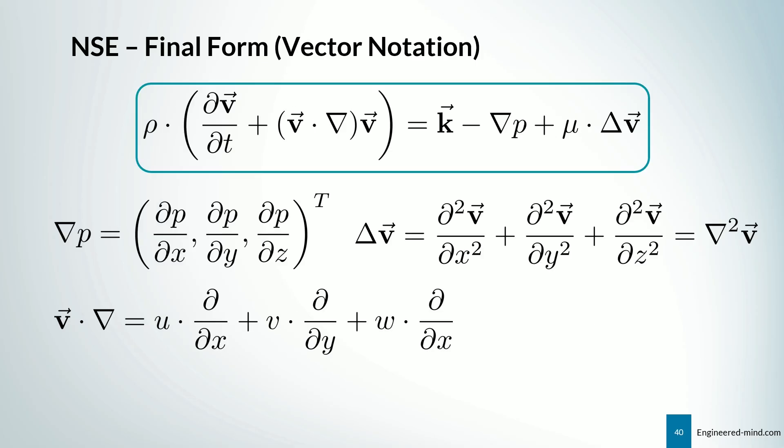And we can write it in a more pretty form, which is the so-called vector notation. So we can rewrite it in that form that we say rho times dv by dt plus v times the divergence times v equals k minus the pressure gradient. So minus the gradient of p plus mu times the Laplace operator. So Laplacian of the velocity field. And I have rewritten the Laplacian operator below, so what it actually means. And we can even rewrite the Laplacian operator as the divergence of the gradient. So we have two times nabla, so to speak, which is nothing else than nabla squared of the velocity field. So if you have any questions regarding that, feel free to ask in the comment section.